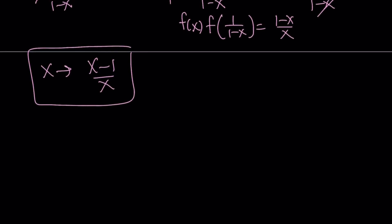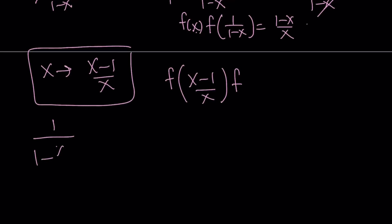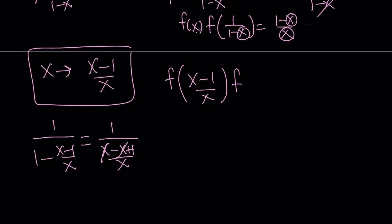Now we're going to replace x with (x-1)/x. So f of x is easy — it's going to be f of (x-1)/x. But the second part and the result are not as easy, so let's go ahead and do those. In 1/(1-x), if you replace x with (x-1)/x and make a common denominator, you're going to get x minus (x-1) over x, which simplifies to 1/x. But it's 1 over 1/x, which is x. So this one gave us f of x.